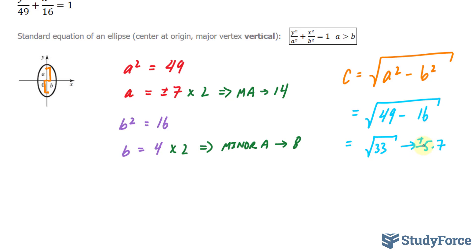We can also easily derive the coordinates of the focus. You'll have 2. So focus 1 is (0, 5.7). We'll call this focus 1 and this focus 2. Therefore, focus 2 has the coordinates (0, -5.7).